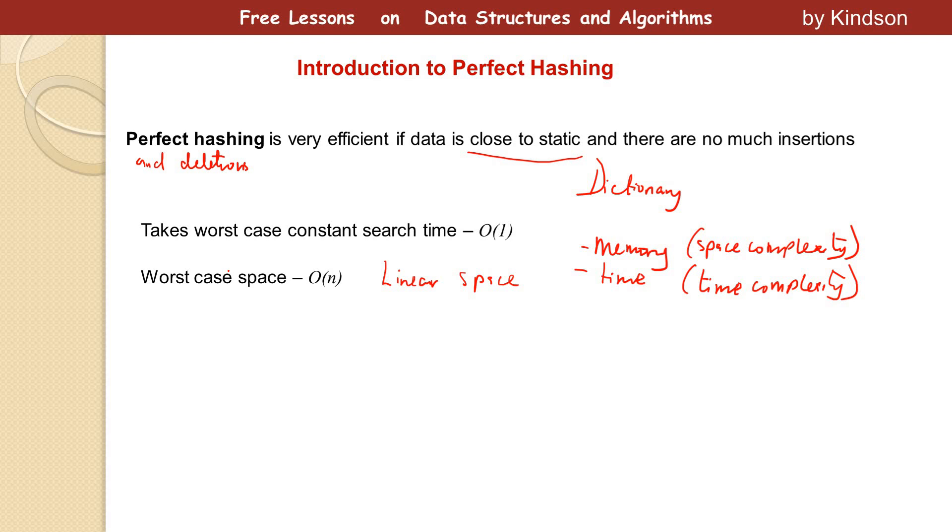How long does it take to build a perfect hash table? It takes polynomial build time, which is order of n squared, O(n²), with high probability. These are basic things about perfect hashing.